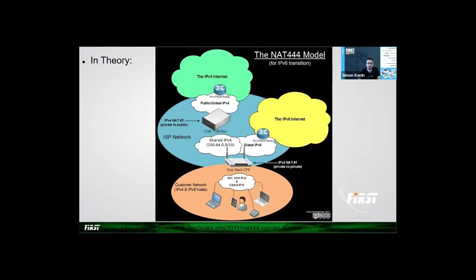Now you can see how a CGN deployment should look in theory. It is meant to be deployed in dual stack — each subscriber has a CGN IPv4 address and also a public external IPv6 address, enjoying both legacy support for IPv4 and IPv6. Sounds good, but in reality CGNs are the wild west. Since we don't have control over the ISP NAT device, we don't know how it is configured. They can do whatever they want, without regulation.